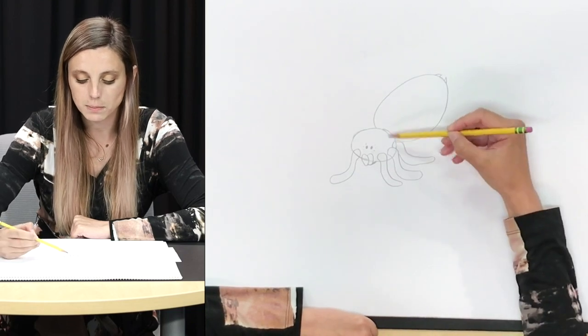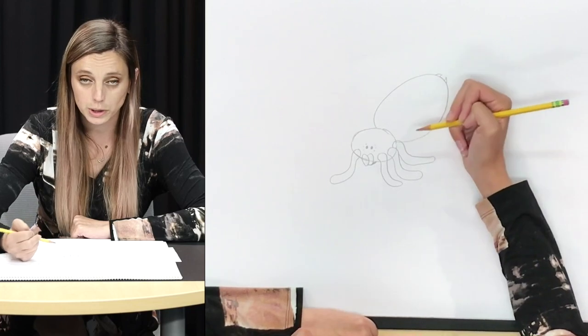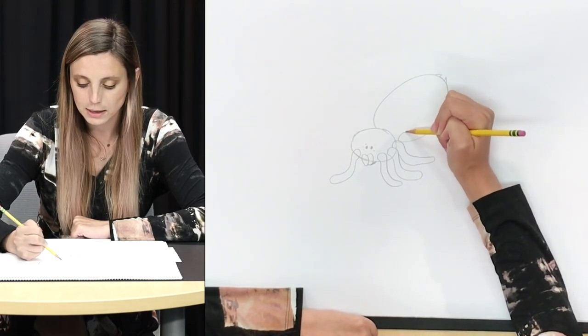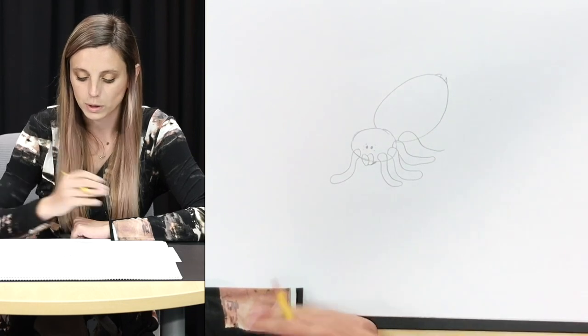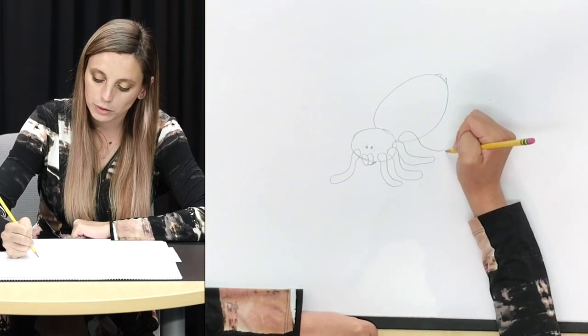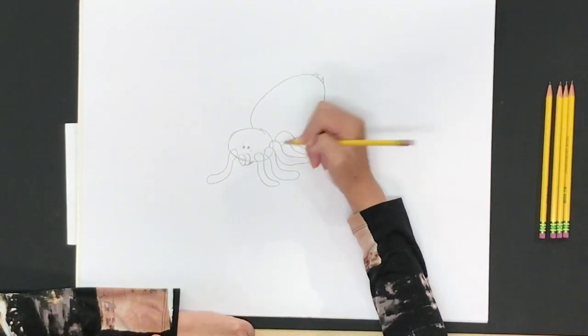We want our third leg to be in between our carapace and our abdomen or between our head and our body. Like before we're going to curve from the previous leg and bring the tip of our legs outwards to balance our spider. We'll curve around and close this leg off.